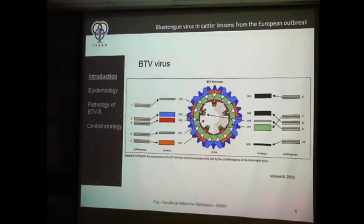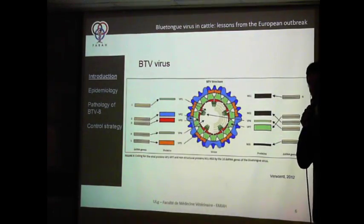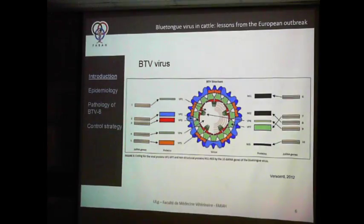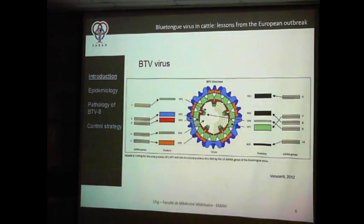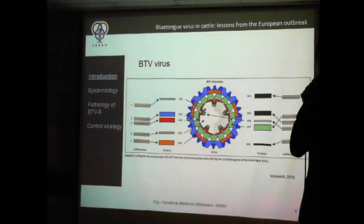...you can see that it has a segmented genome with 10 segments. One reason for this extremely fast evolution is that these segments can reassort and be mixed between different viruses when there is a co-infection of the host, giving birth to a new virus. There is constant evolution of this virus — quite similar to influenza virus in its extremely fast evolution rate.